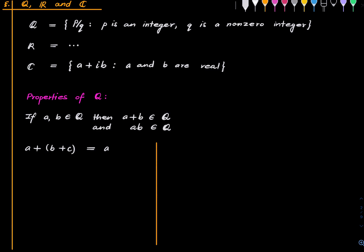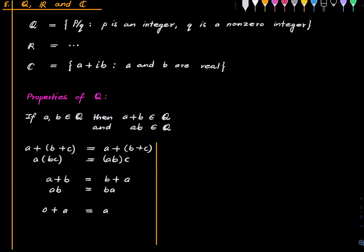There are further properties. We have the associativity law for addition and multiplication. We have commutativity for addition and multiplication for all rational numbers a and b. We have an additive identity: 0 + a = a for all rationals a. And 1 · b = b for all rationals b. We have the additive inverse: a + (−a) = 0 for all rationals a. And multiplicative inverse: a · (1/a) = 1 whenever a is non-zero — since 1/0 is not defined.